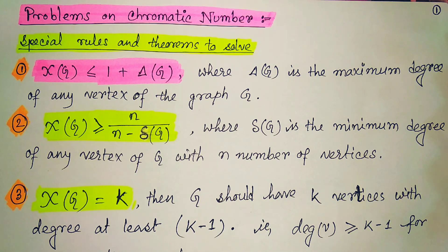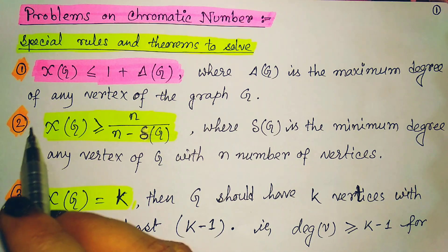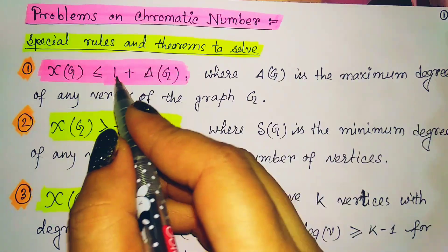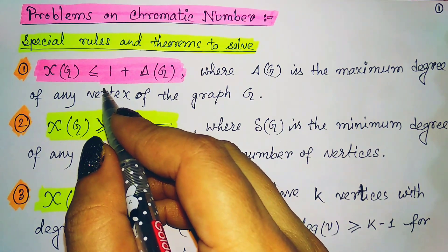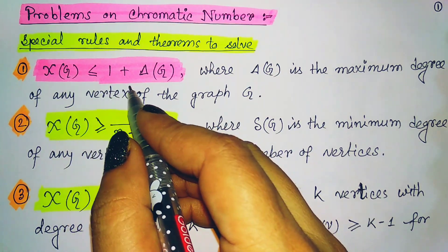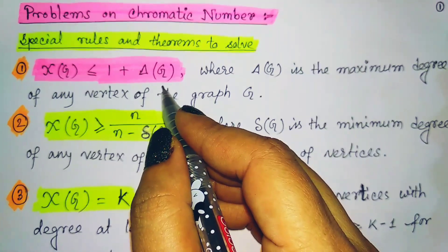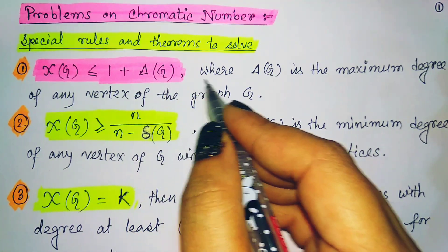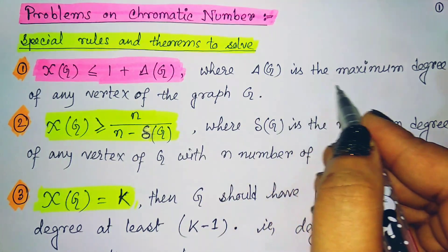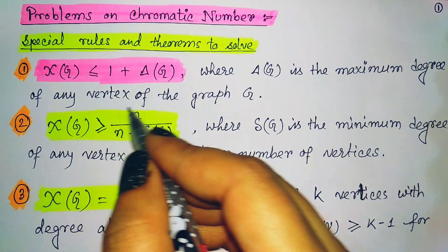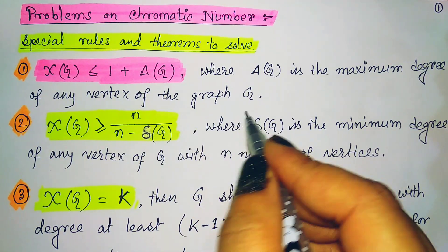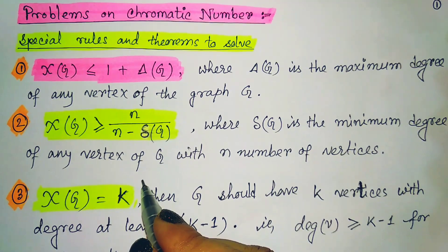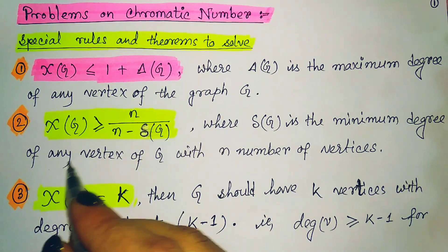The first theorem or first rule is: the chromatic number of G is always less than or equal to 1 plus Δ(G), where Δ(G) is the maximum degree of any vertex of the graph G.